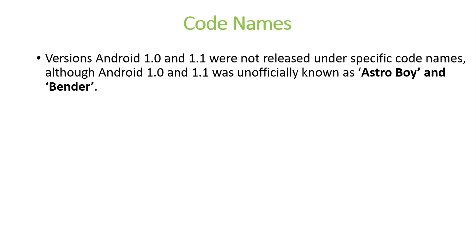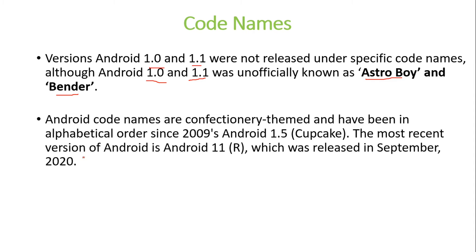Android versions 1.0 and 1.1 were not released under any specific code names, although they were unofficially known as Astro Boy and Bender. Afterwards, Android code names were confectionery-themed — relating to sweets or chocolates — and have been in alphabetical order since 2009's Android 1.5, which is also known as Cupcake.